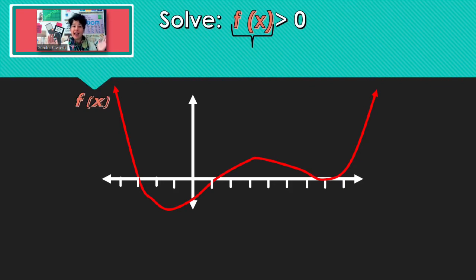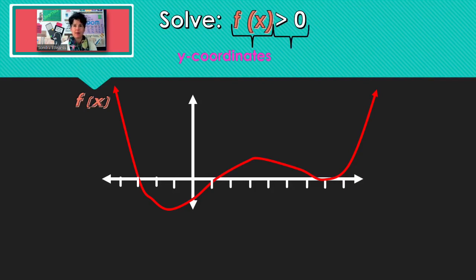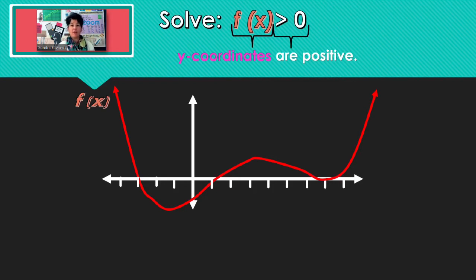All of f of x is the same thing as y — it is the y part of your x comma y. Greater than zero: what kind of numbers are greater than zero, bigger than zero? Those are positive numbers. So ultimately, to solve f of x is greater than zero, we're just looking for the x's where the y-coordinates are positive.